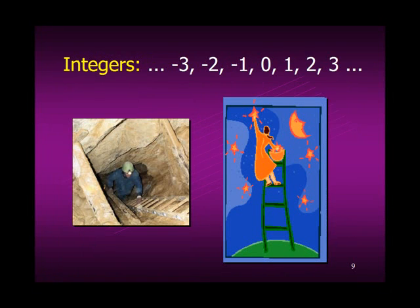We added the negative numbers to permit quantification in opposing directions. So 10 feet below ground versus 10 feet above ground, wind blowing east, wind blowing west, etc. This created the integers.